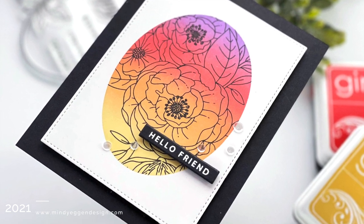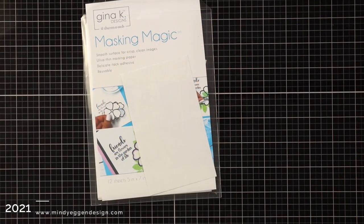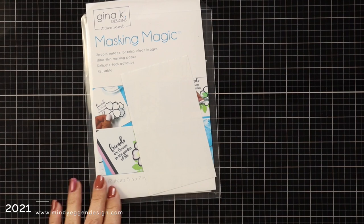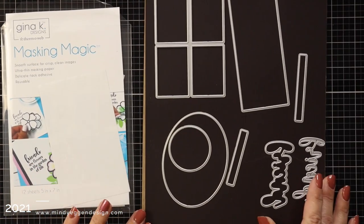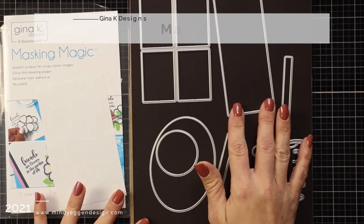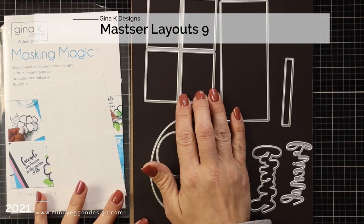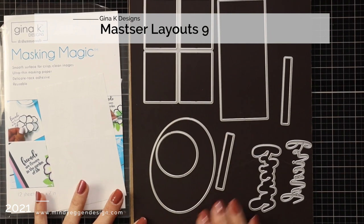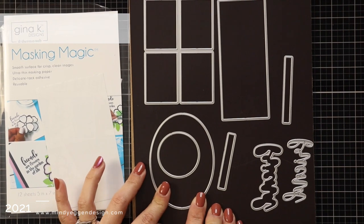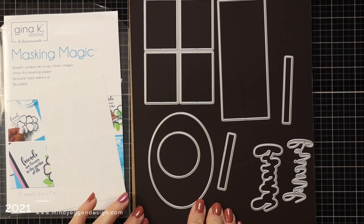So first let's take a look at a couple of the main products that I'll be using, which is the Masking Magic from Gina K Designs and also the Master Layout 9 die set which has these shapes in here to create masks. We will die cut these out of the Masking Magic.